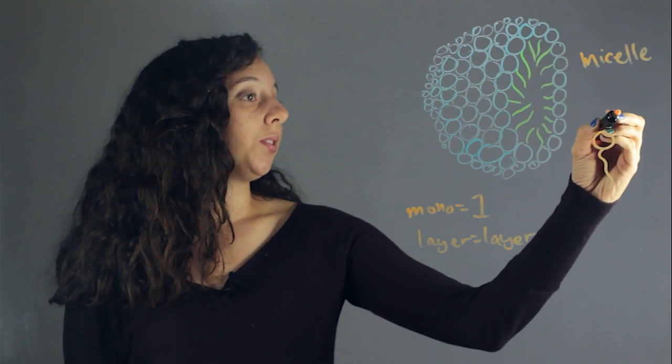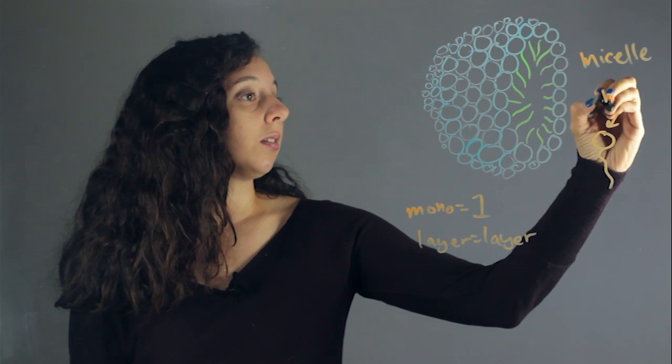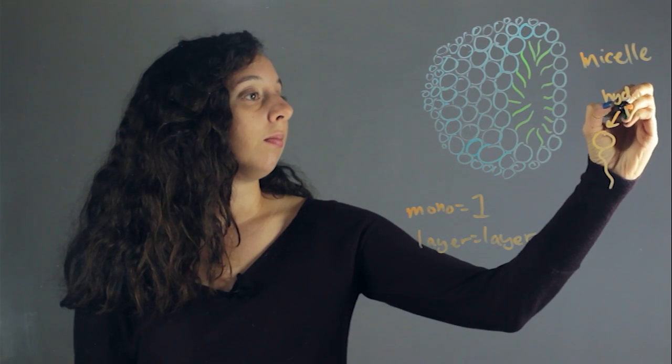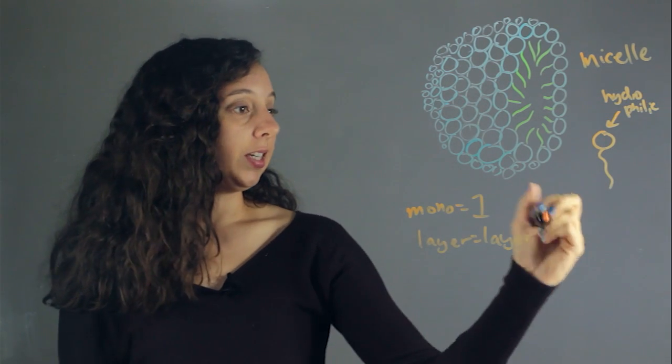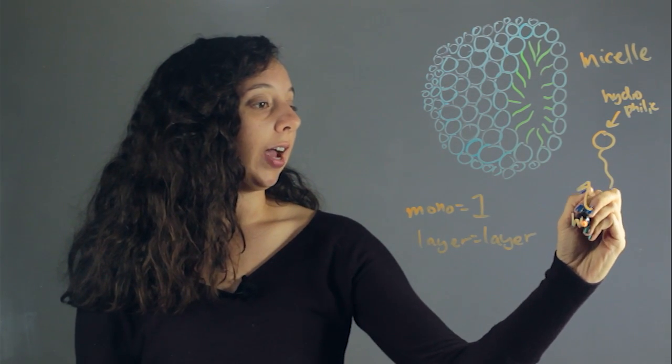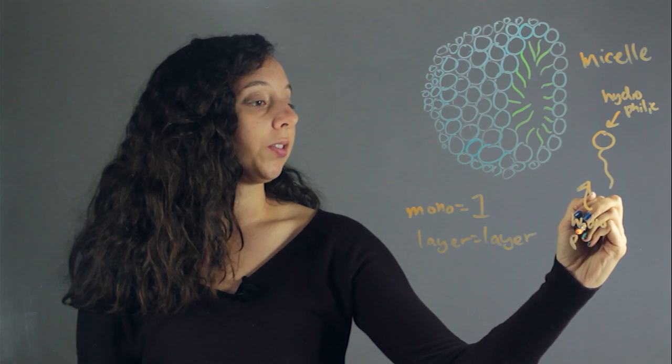And what happens is that this sphere part is hydrophilic, which means it likes water, and the tail is hydrophobic, which means it wants to stay away from water.